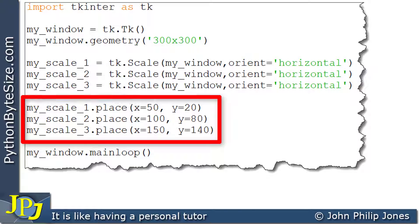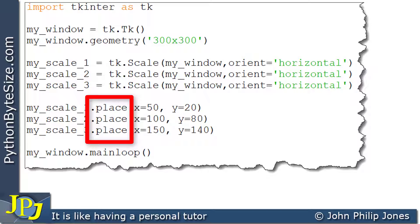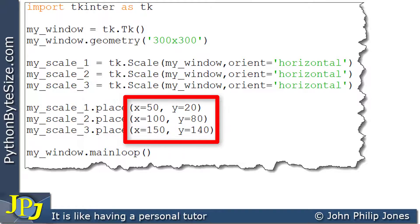These three program statements are responsible for placing the widgets on the window using coordinate positions. You can see I'm referring to each of these scales in turn, and in each case I'm invoking the place method. You can see here I'm choosing different coordinate positions.